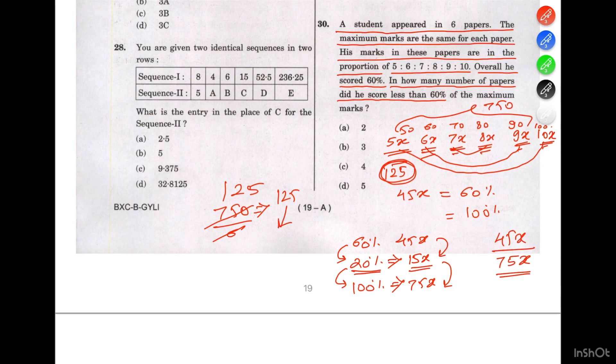Now they're asking in which papers he scored less than 60%. We have to find what is 60% of 125. 10% of 125 will be 12.5, and 60% will be times 6. So 6 times 5 is 30, carry the 3, 6 times 2 is 12 plus 3 is 15, which equals 75.